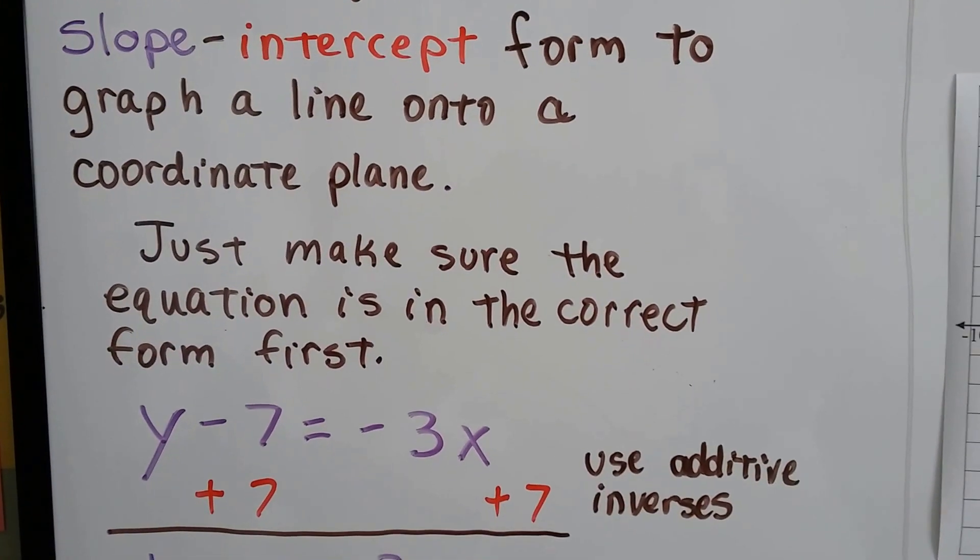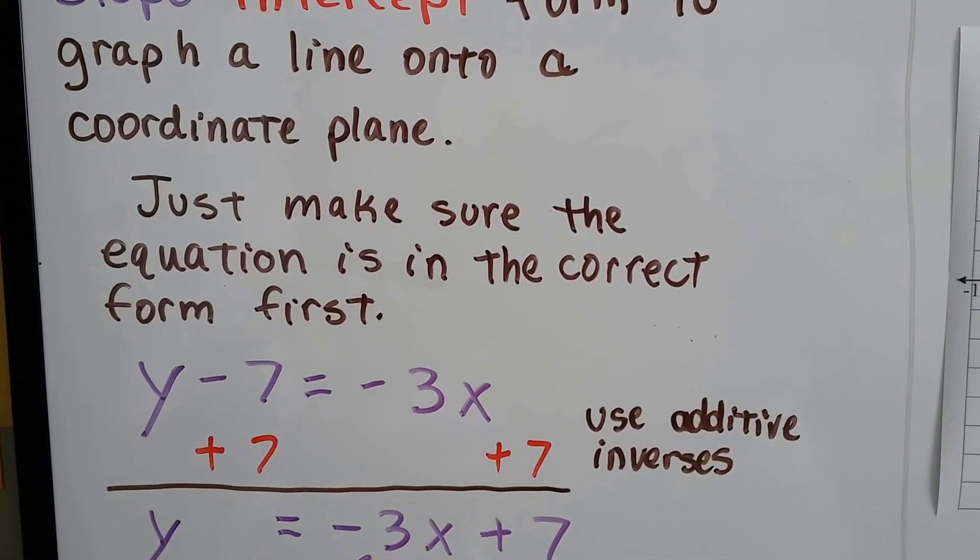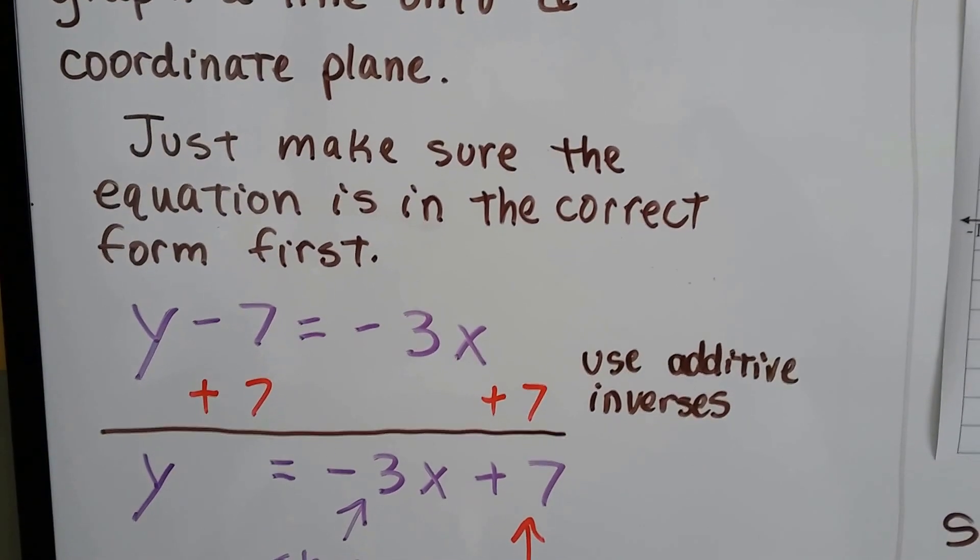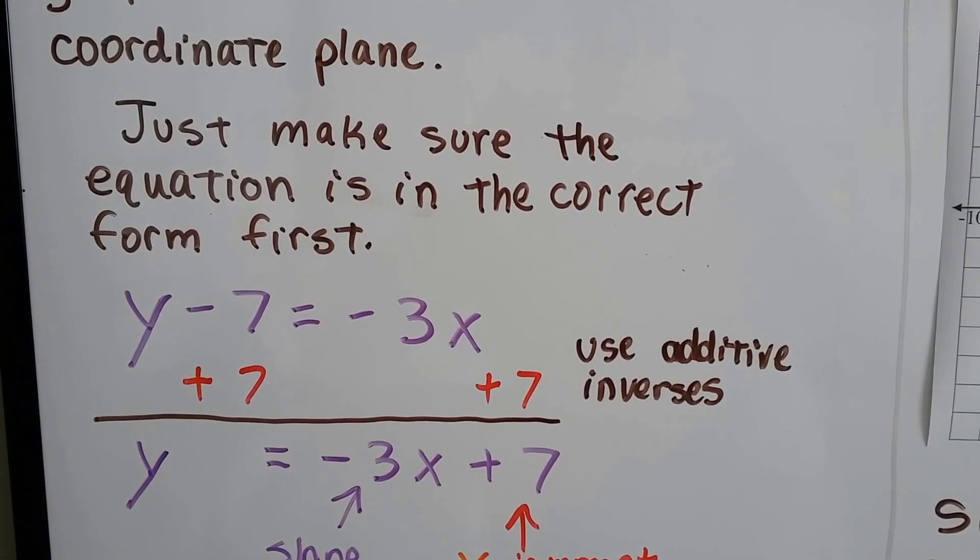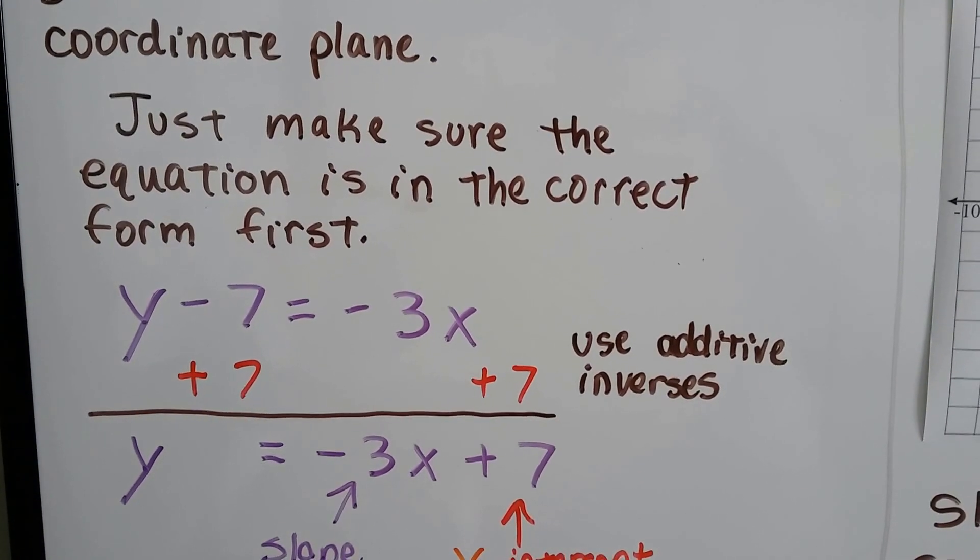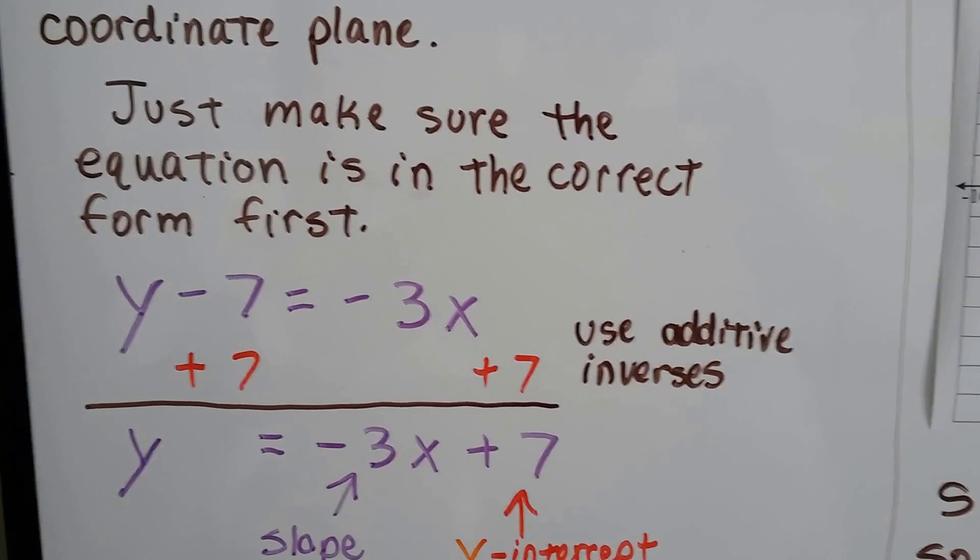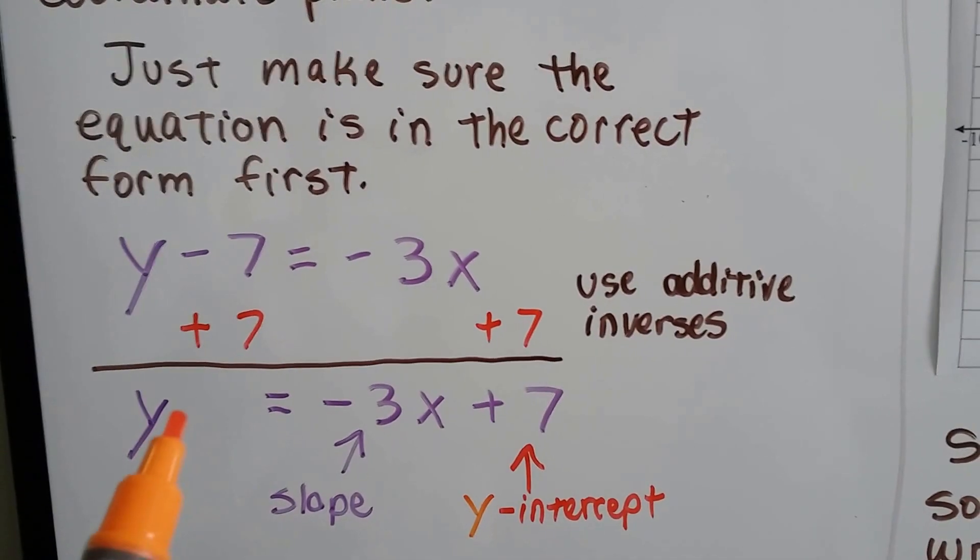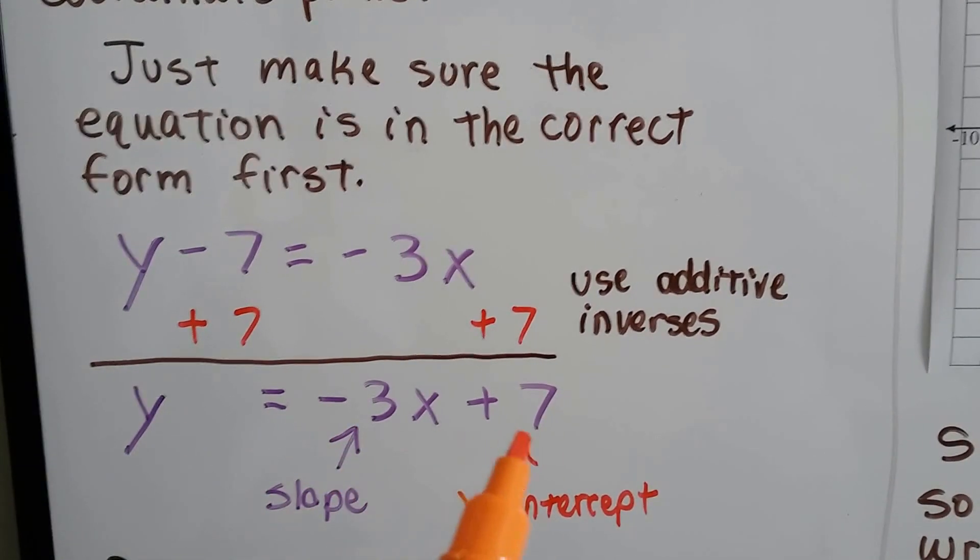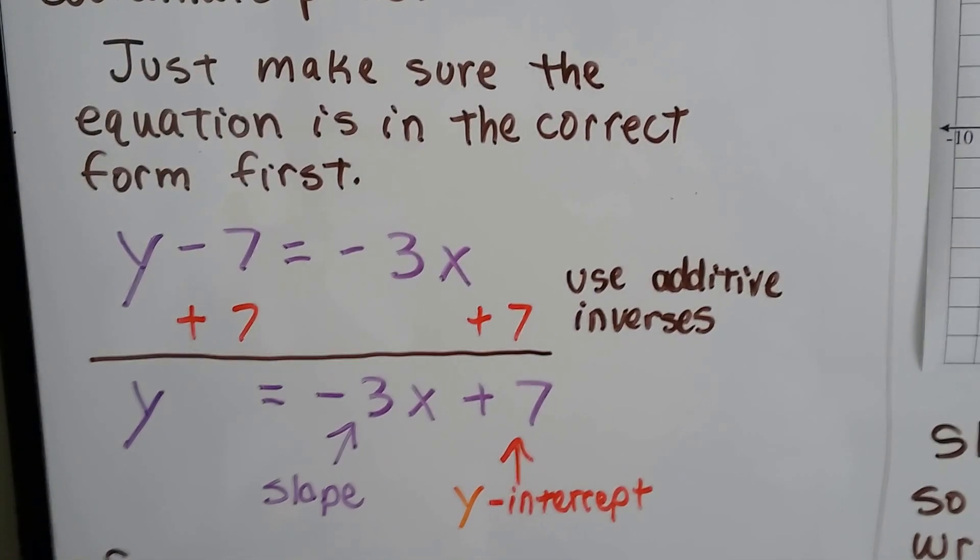We just gotta make sure that the equation's in the correct form first, and we can use additive inverses to put it that way. So if we have y minus 7 equals negative 3x, that's not in slope-intercept form. So we can add 7 to each side. That'll isolate the y to one side. We solve for y. And now we have y equals negative 3x plus 7. It's in slope-intercept form.